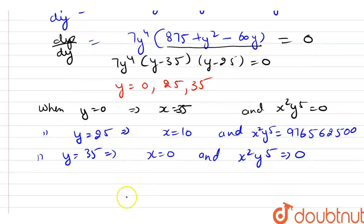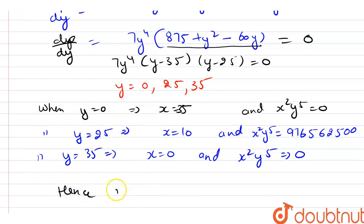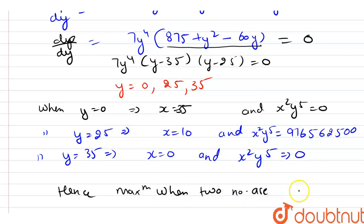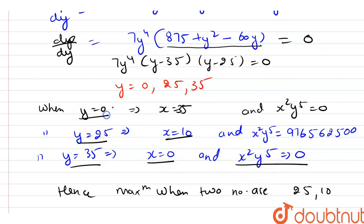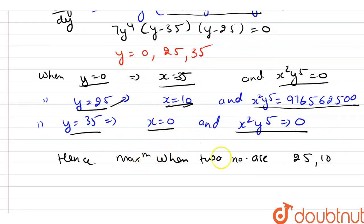Hence the maximum occurs when the two numbers are 25 and 10. When y is 35 then x is 0, so the value becomes 0. And when y is 0 and x is 35, then also the value becomes 0. But when y is 25 and x is 10, it gives us a non-zero maximum value. So the maximum of x squared into y raised to power 5 is achieved when the two numbers are x equals 10 and y equals 25. This is our final answer. Thank you.